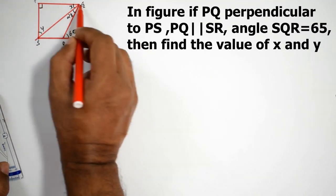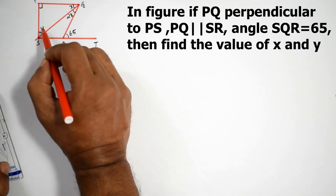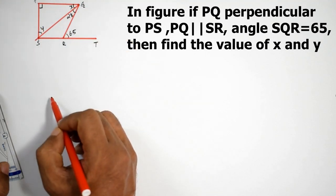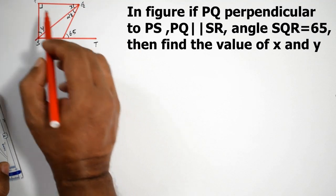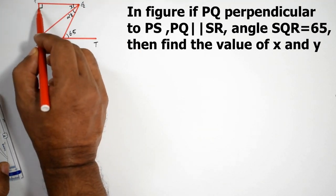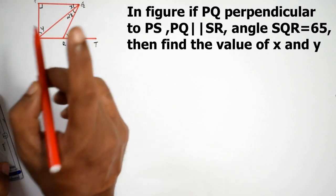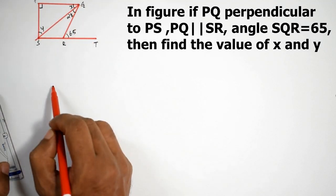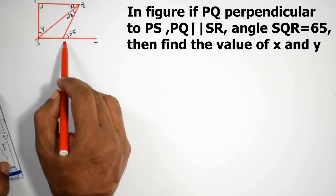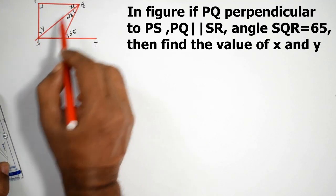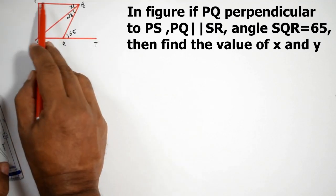PQ is parallel. Here, this is 90 degrees — this is the important part. PQ and SR are parallel. The angle will be equal to the corresponding angle. This is parallel.